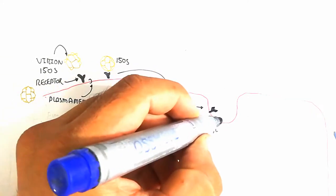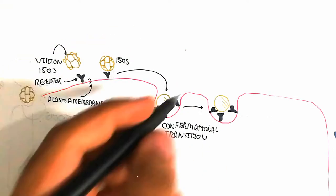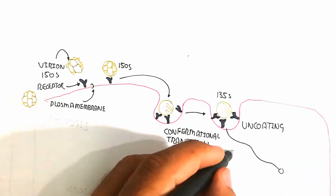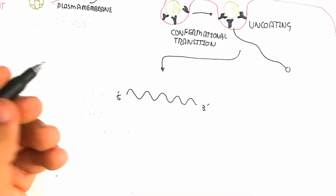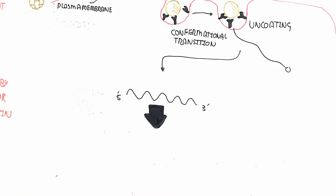After this, conformational transition leads to endocytosis and uncoating. In this way, the messenger RNA will be released. This is the viral RNA, the viral positive strand messenger RNA.